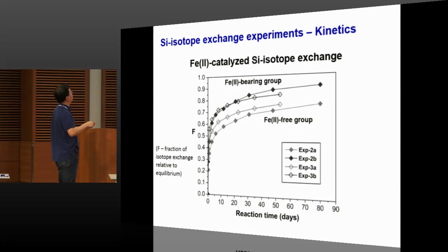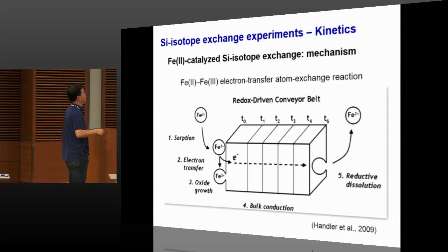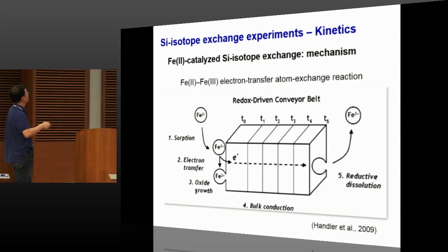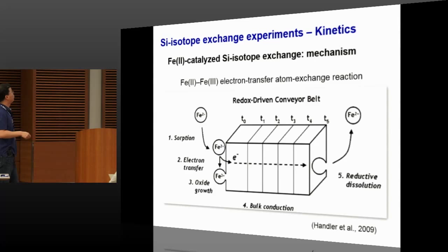We can explain this by the Fe2+/Fe3+ electron transfer atom exchange reaction. When Fe2+ sorbs onto the iron silica gel solid, the electron from Fe2+ can move into the solid and move around. One Fe3+ in the solid can eventually receive this electron, be reduced, and be released back to solution. This process leads to the breaking of silicon-iron bonding, which is a potential way to accelerate the silicon isotope exchange between the aqueous and the solid.